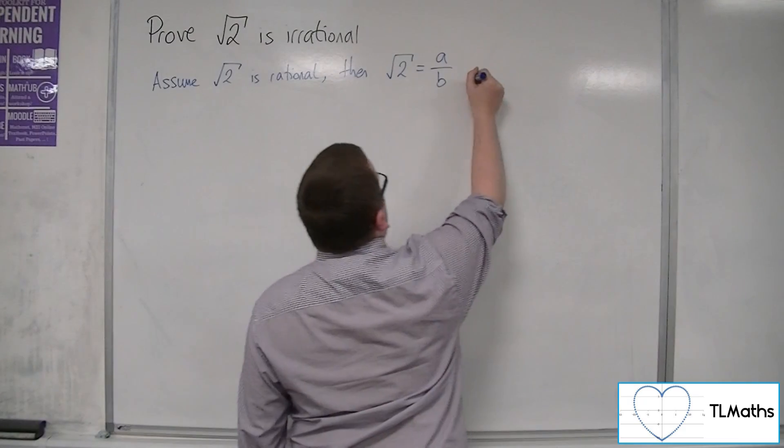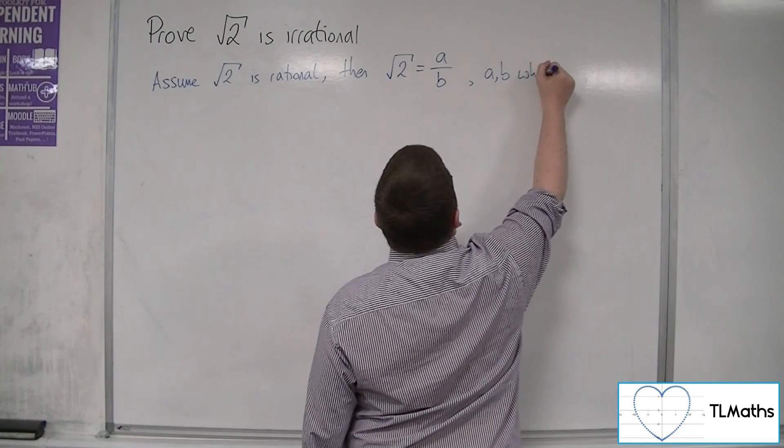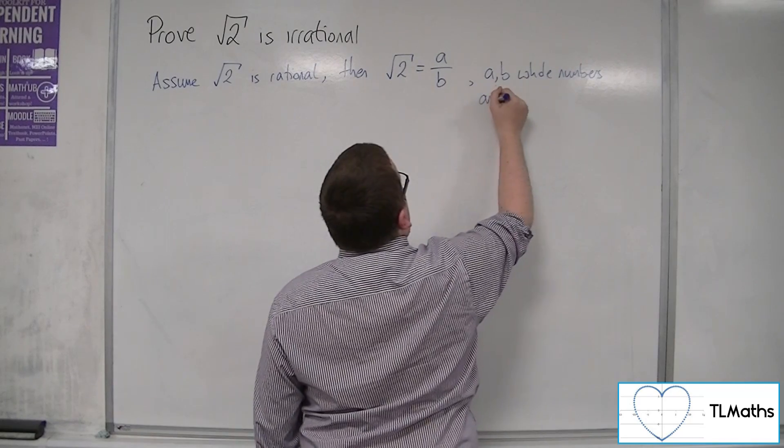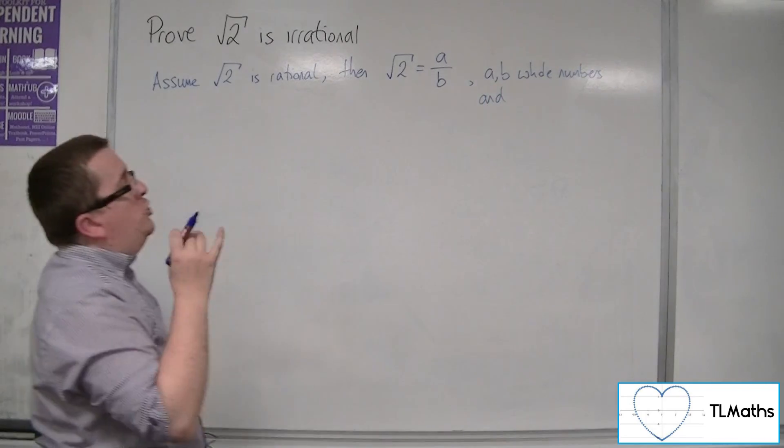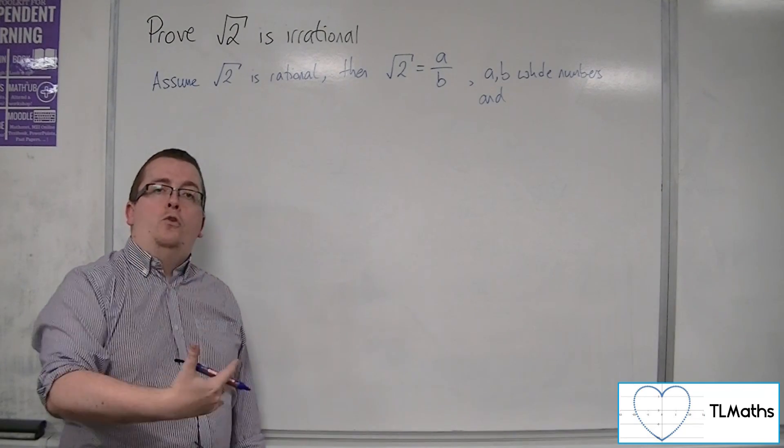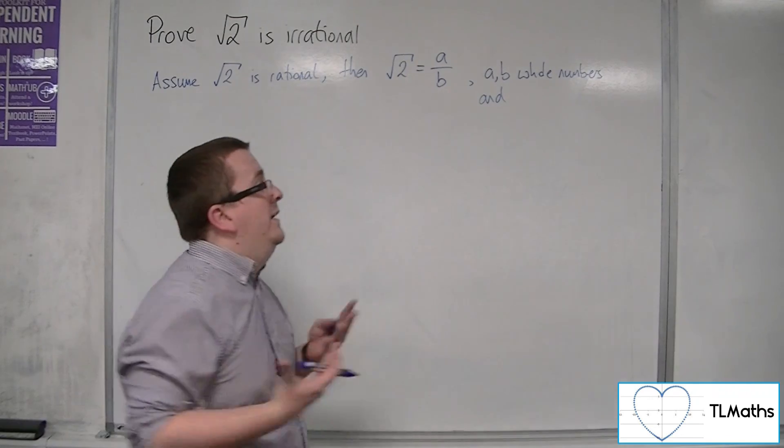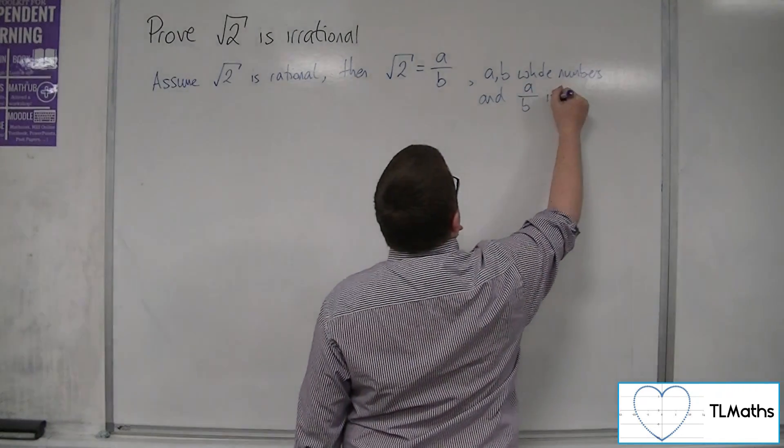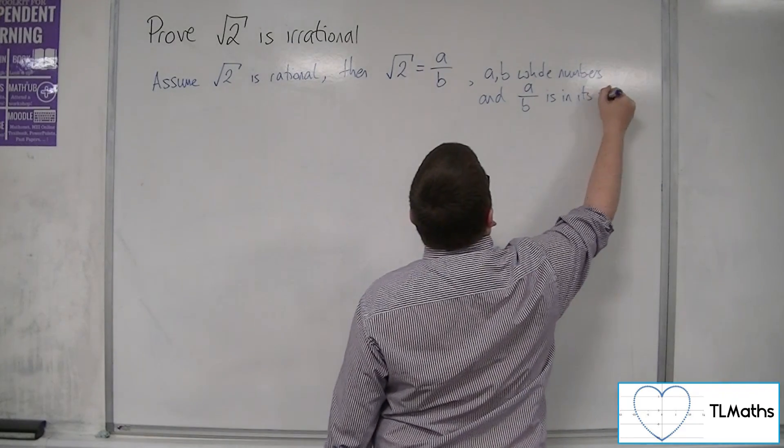Okay, so a and b are whole numbers, and we could make sure that a over b is in its simplest form, so there are no cancellations left to be made. So a over b is in its simplest form.